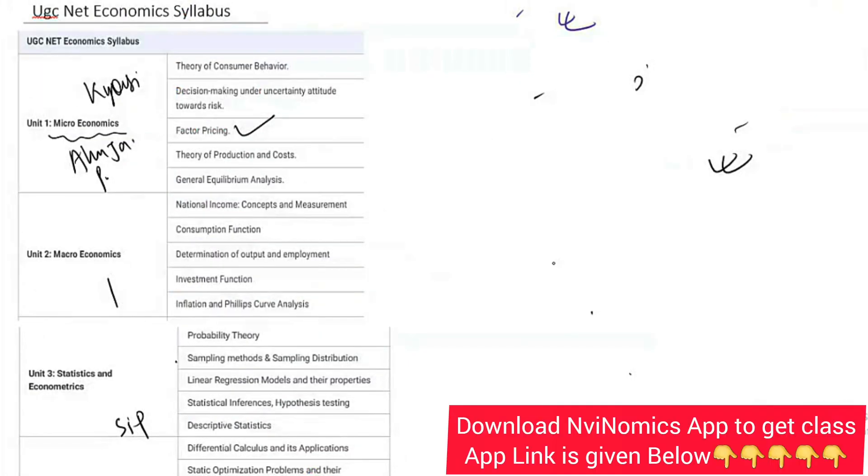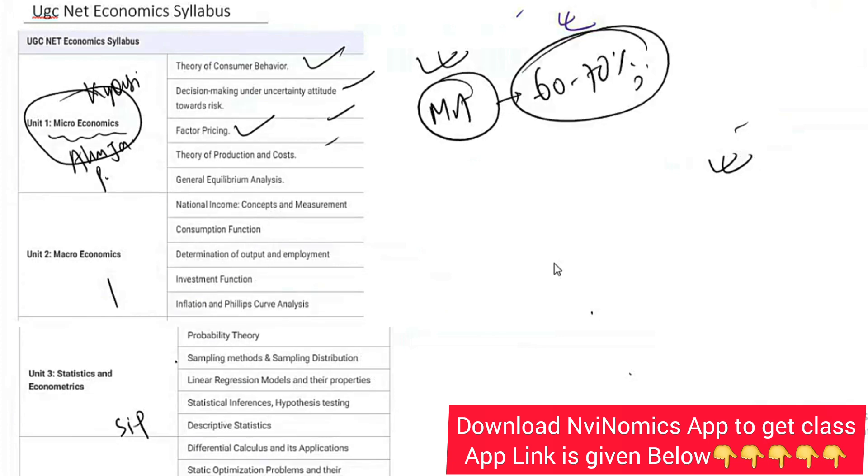These are the 10 topics. Book list and everything I have already discussed in detail. This is microeconomics - you have to read these topics. People who are prepared for the MA entrance, nearly 60 to 70 percent topics are almost same for the NET JRF. If you have prepared very well for MA entrance examination, 60-70 percent you are already prepared.